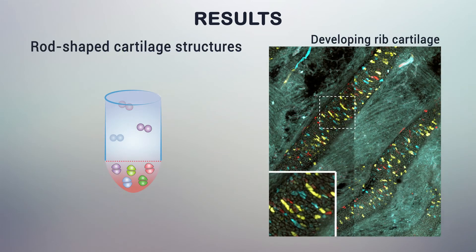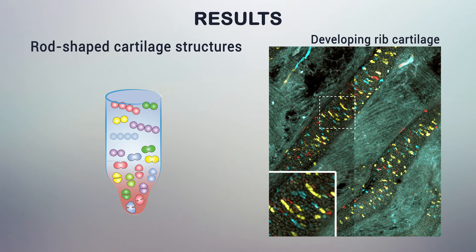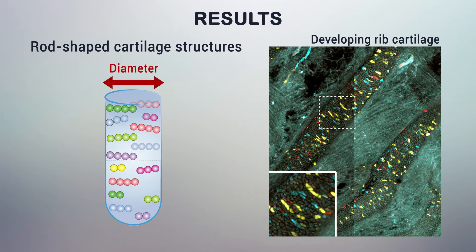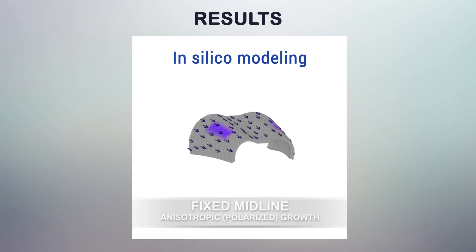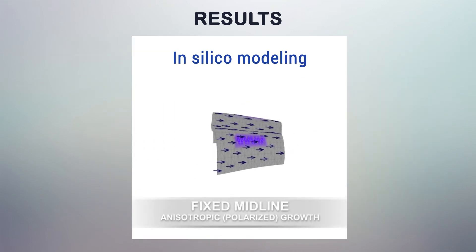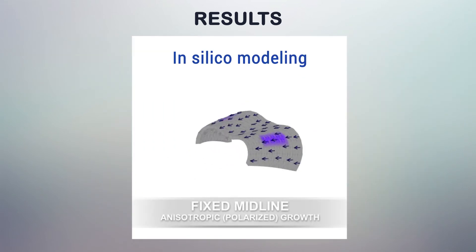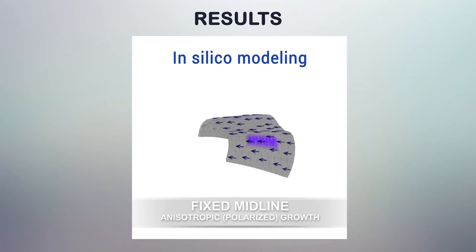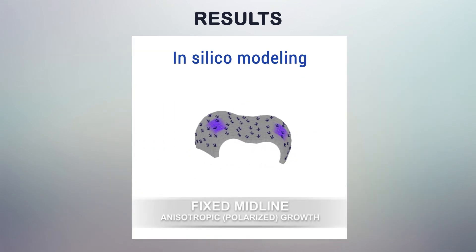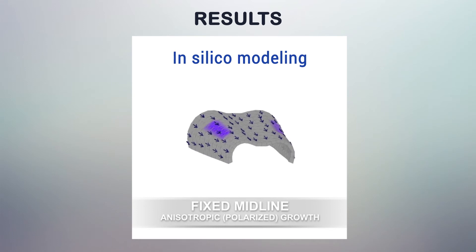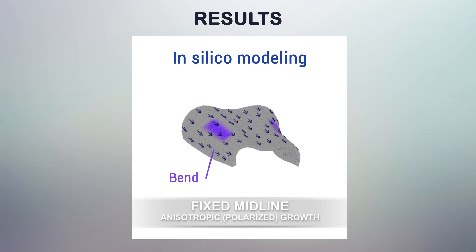Interestingly, in rod-shaped cartilage structures, the development of clonal columns determines the well-defined diameter and resulting rod-like morphology. Using in-silico modeling, we discovered that anisotropic proliferation based on multiple clonal integration might explain cartilage bending and groove formation at the macro scale.